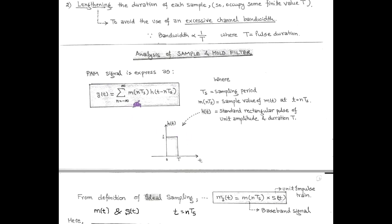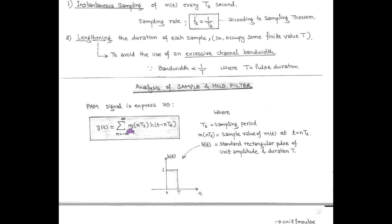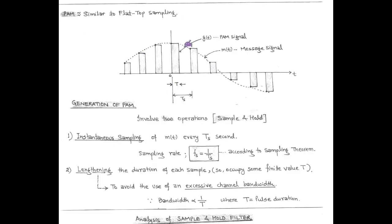According to the expression of the PAM signal, this standard rectangular pulse is shifted along both the positive and negative time axis, and the amplitude of this standard pulse varies according to the sample value of the modulating signal. After using the sample and hold filter, we get the flat top PAM signal.